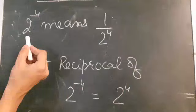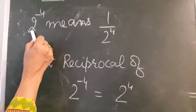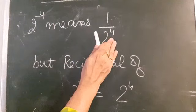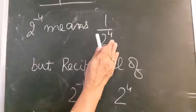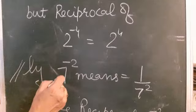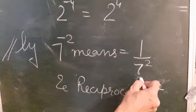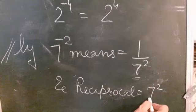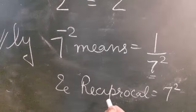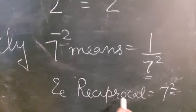What is the meaning of 2 raised to power minus 4? We can write it as 1 upon 2 raised to power 4. But when finding the reciprocal of 2 raised to power minus 4, reciprocal means the denominator becomes the numerator. So the reciprocal is 2 raised to power 4. Similarly, 7 raised to power minus 2 means 1 upon 7 raised to power 2, and the reciprocal of 7 raised to power minus 2 is 7 raised to power 2 — only the sign of the power changes, from minus 2 to positive 2.